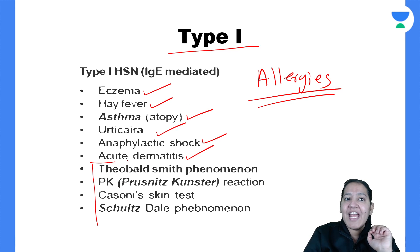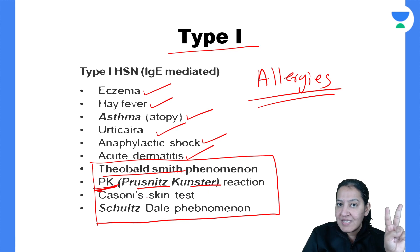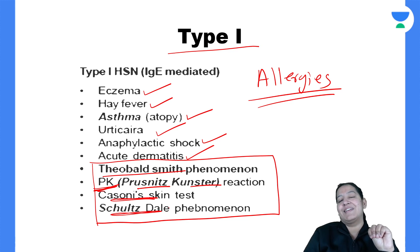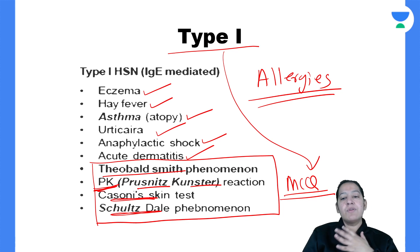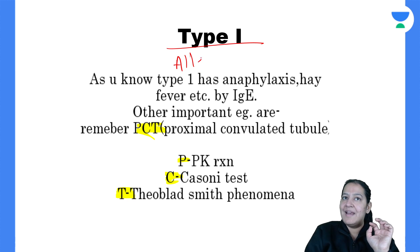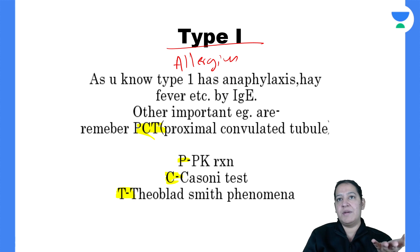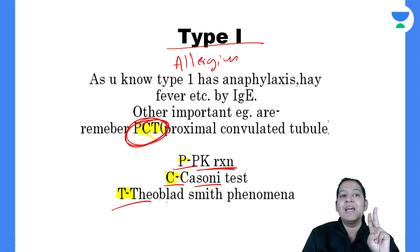Apart from allergies, there are a few named reactions in type 1 hypersensitivity. These are: the Theobald-Smith phenomenon, PK reaction (Prausnitz-Küstner reaction), Cassoni test, and Schultz-Dale test. Students have confusion about these named tests in MCQs. My mnemonic for type 1 is PCT: P is PK reaction (Prausnitz-Küstner reaction), C is Cassoni test, and T is Theobald-Smith phenomenon.